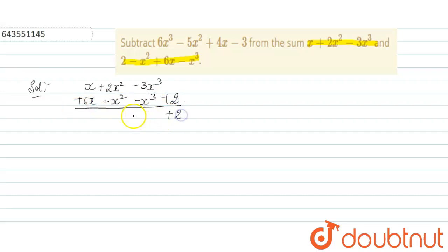So it will be +2 - 4x³ + x² and 7x. Right? Now what is it asking from the sum? So from sum, that is 7x + x² - 4x³ + 2, we have to subtract.